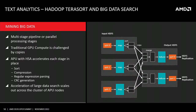The last workload is text analytics — another big data example. The dominant algorithm here is Hadoop-based TerraSort, a big data search with a multi-stage pipeline. Traditional GPU has been challenged here due to the overhead of data copies. An APU with HSA acceleration operates in place: sort, compression, regular expression parsing, and CRC generation are all done in place, allowing acceleration of large data search that scales out across clusters of APU nodes.